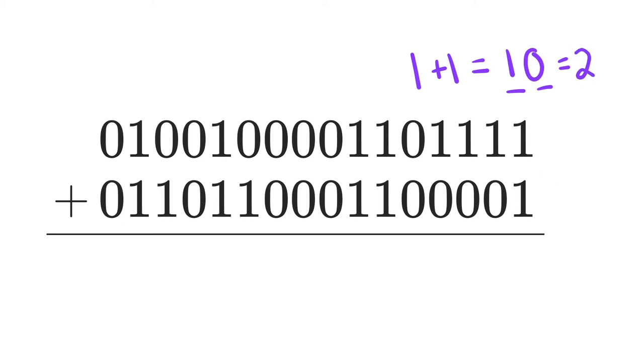So now, down here, we can say 1 plus 1 is 0 and carry the 1. Then we have 1 plus 1 plus 0, that's 2 again. So we put the 0, we carry the 1. 1 plus 1 plus 0 is 2 again. We put the 0, we carry the 1. 1 plus 1 plus 0 is 2 again. We put the 0, we carry the 1.